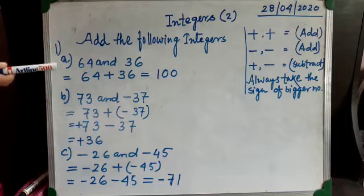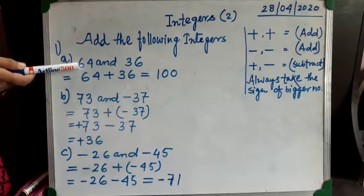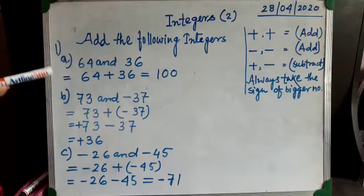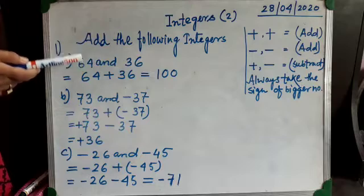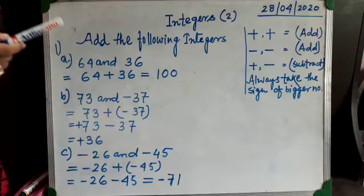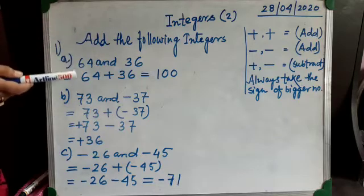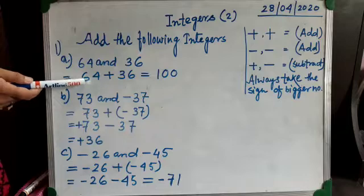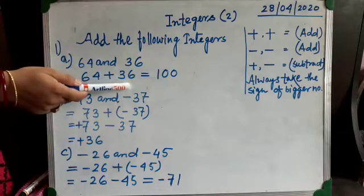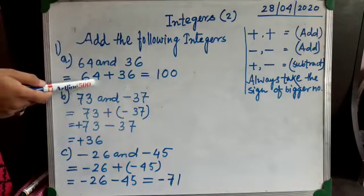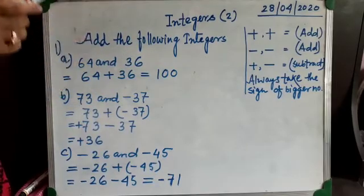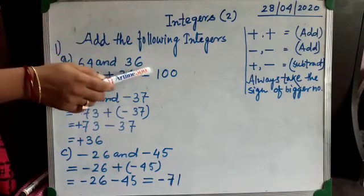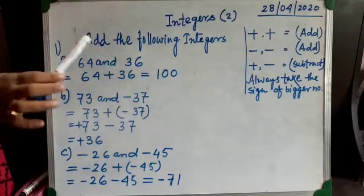The first example: we have to add 64 and 36. Both numbers are positive because no sign is mentioned. So we write 64 plus 36 as a normal addition and the result is 100. If you want, you can put a plus symbol before the answer; otherwise there is no need.